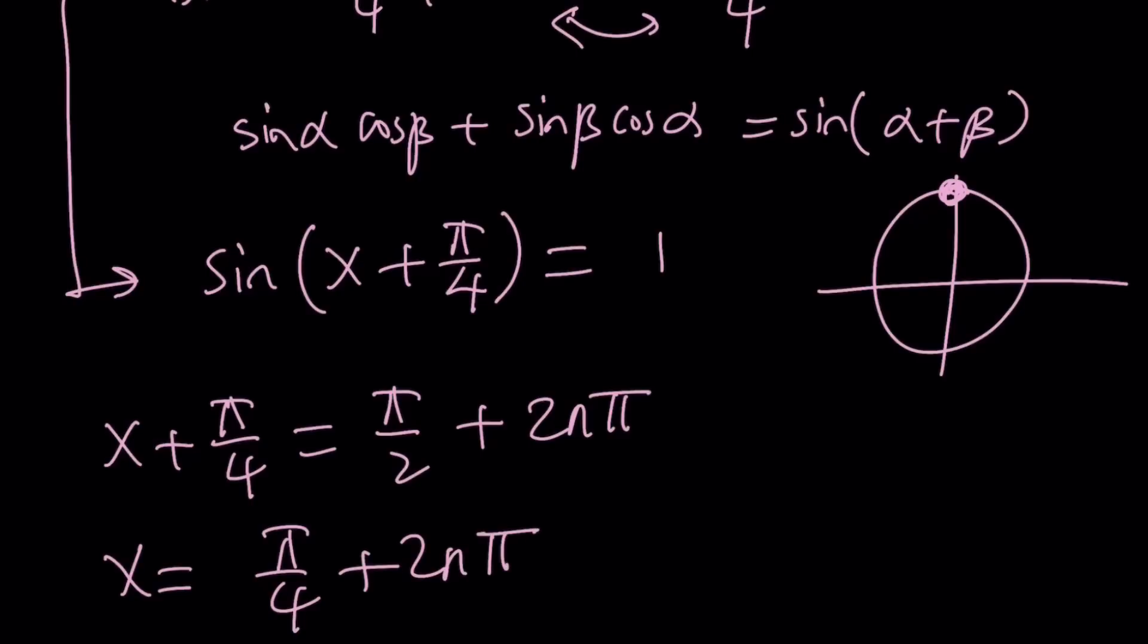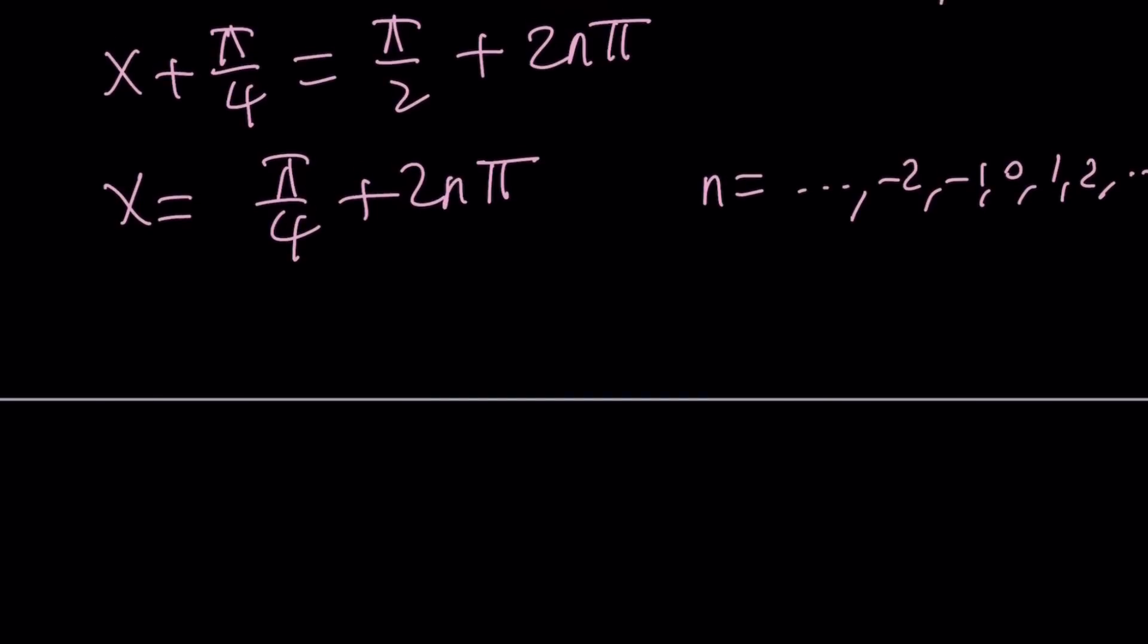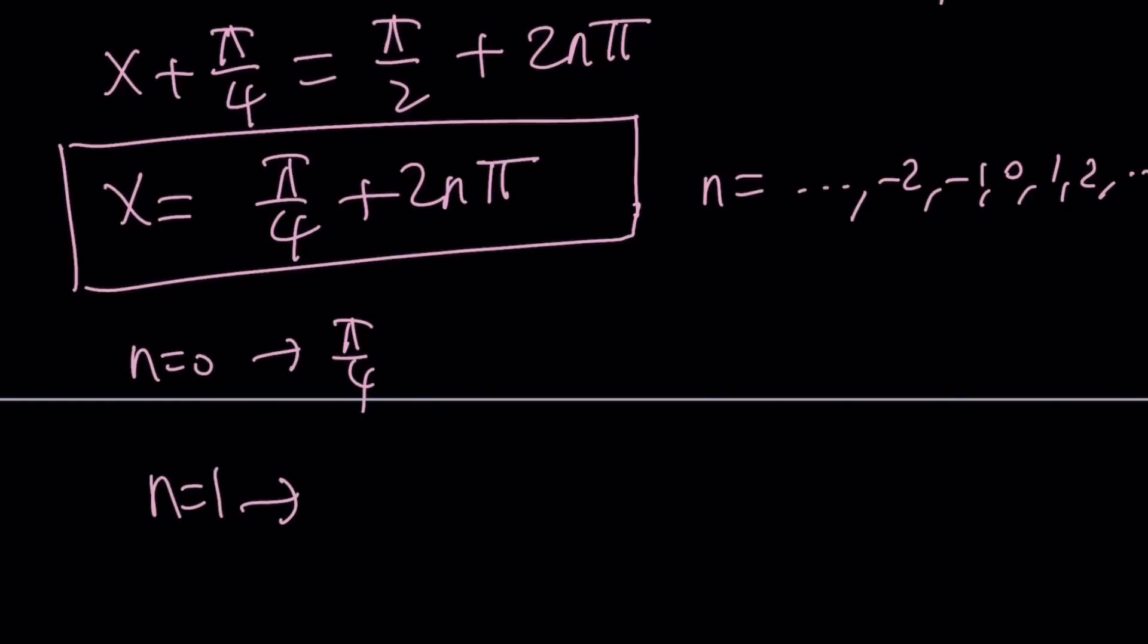Now, if you go ahead and replace n with integers—could be negative 2, negative 1, 0, 1, all the integers positive and negative and 0—you're going to get all the values. For example, I'll show you a graph at the end which will verify this. If n is 0 you get pi over 4. If n is 1 you get 9 pi over 4.